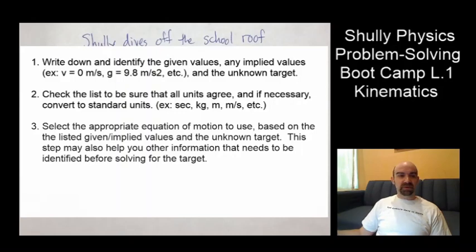Number three is the important one. Actually, they're all important. But this is usually the one that gets people caught up. Like, what do I do with these numbers? So we're going to select the appropriate equation of motion to use based on the listed given and implied values. We've listed them. They're all here. So I can actually put the words away. Just look at those values. This step may also help you find other information that needs to be identified before solving for the target.